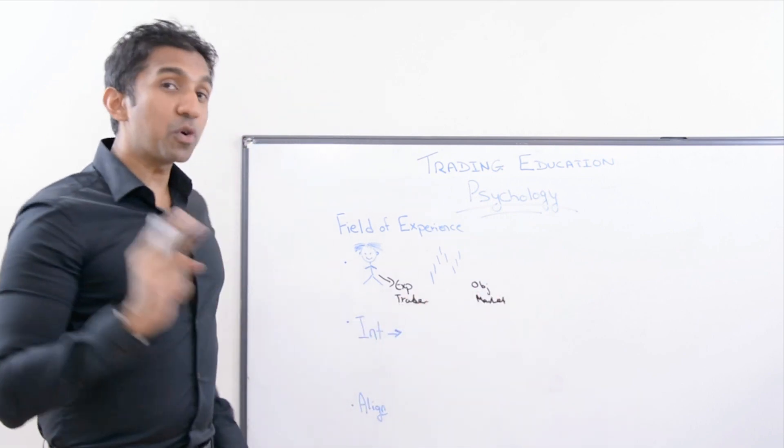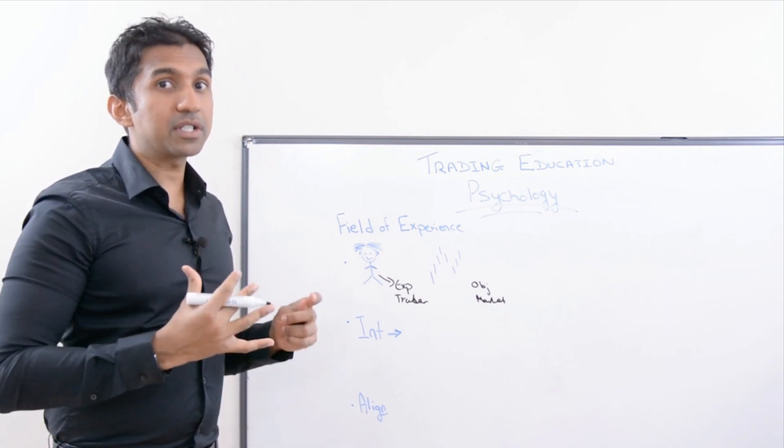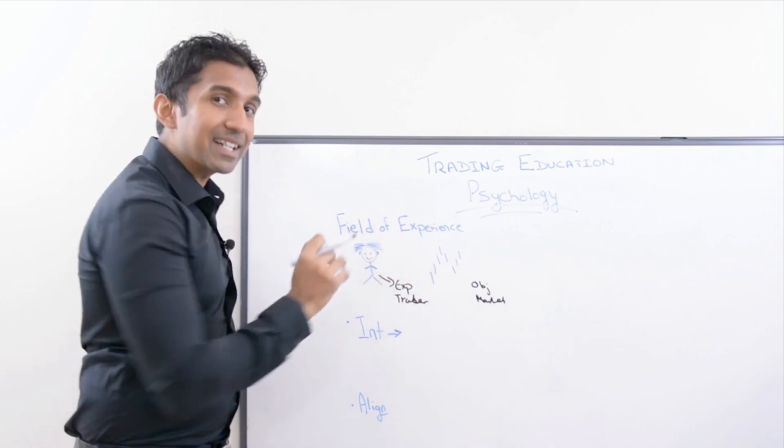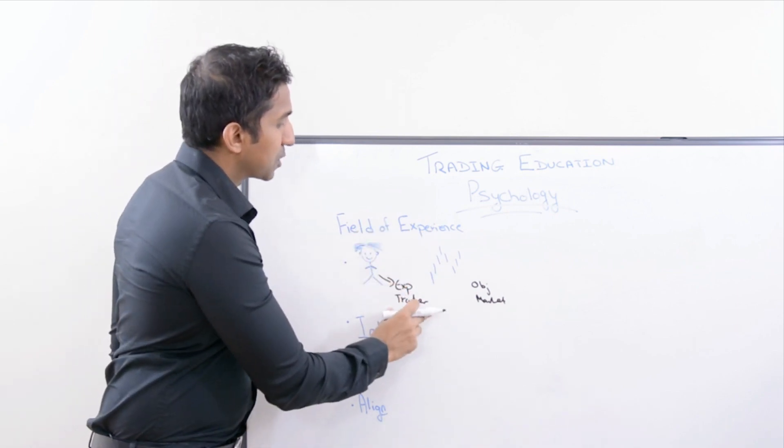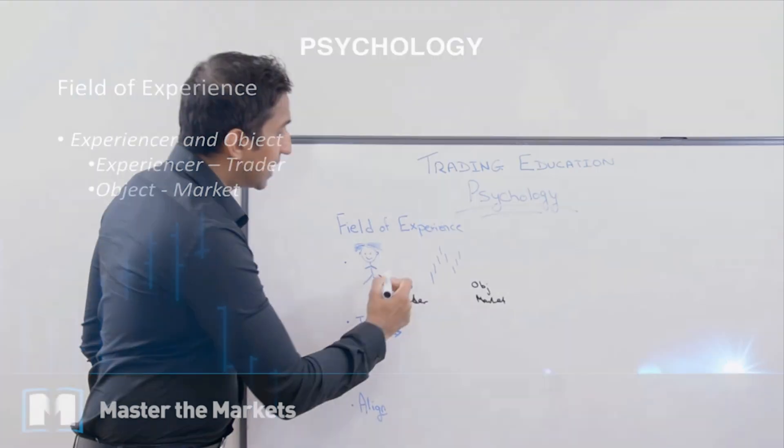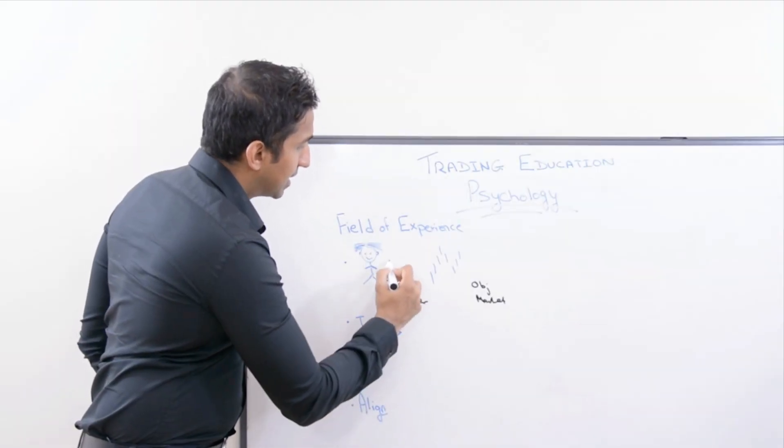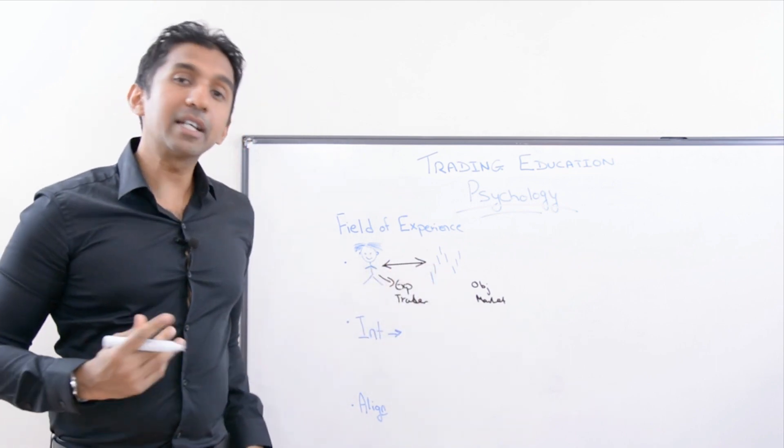You must always have these two elements because think about it, without that you cannot come into this field of experience. But that's not yet. Let me explain this a bit further. Firstly, you need these two elements. The second thing that you then need to create the experience is the interaction between the experiencer and the object.